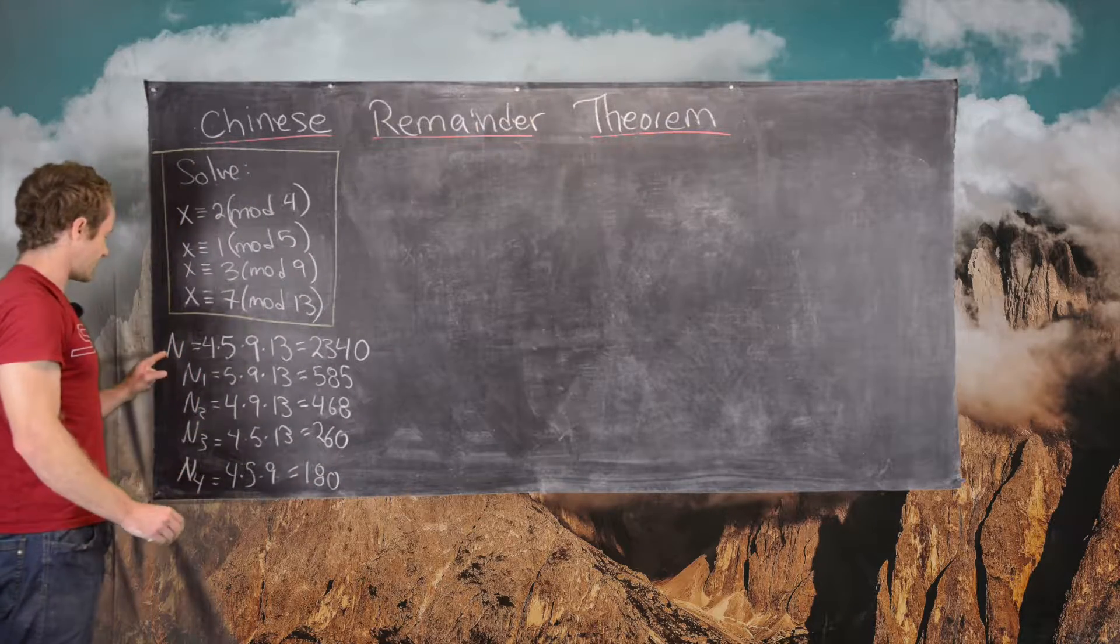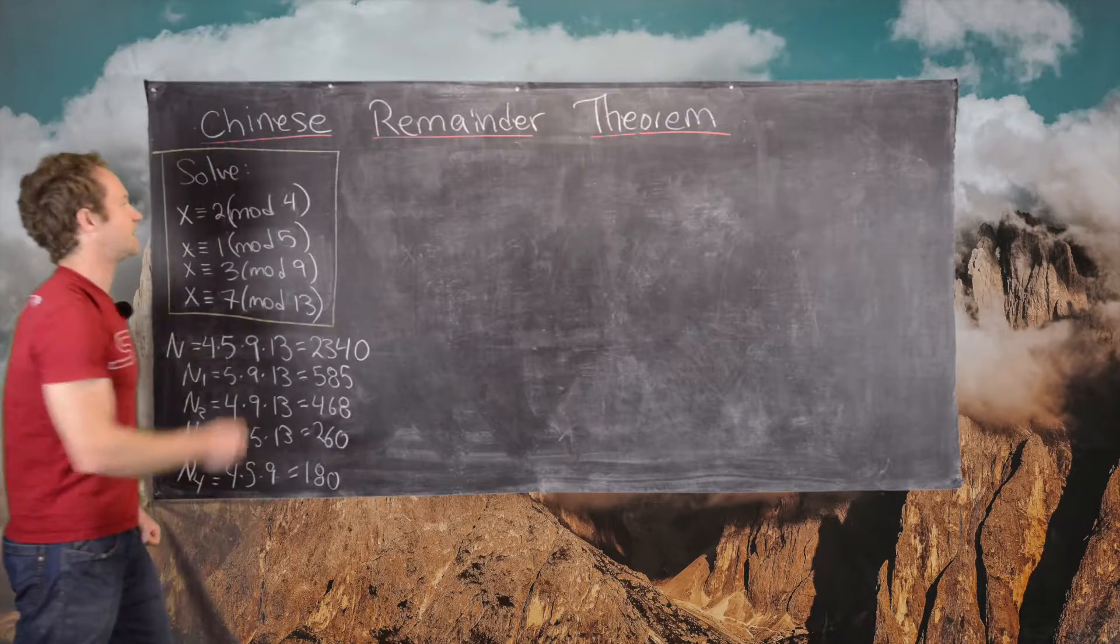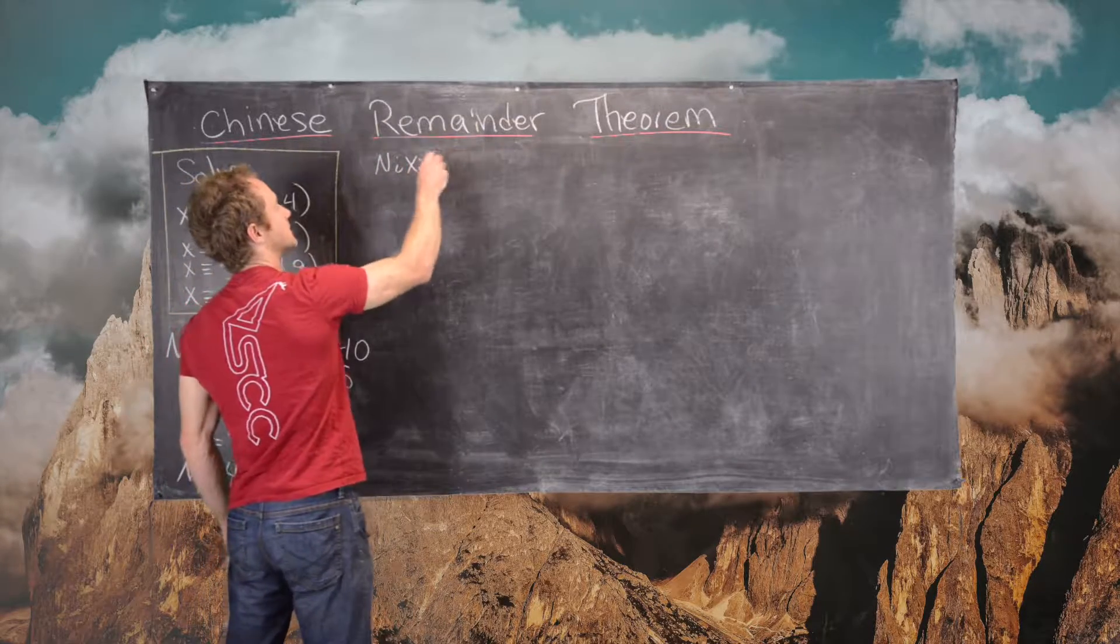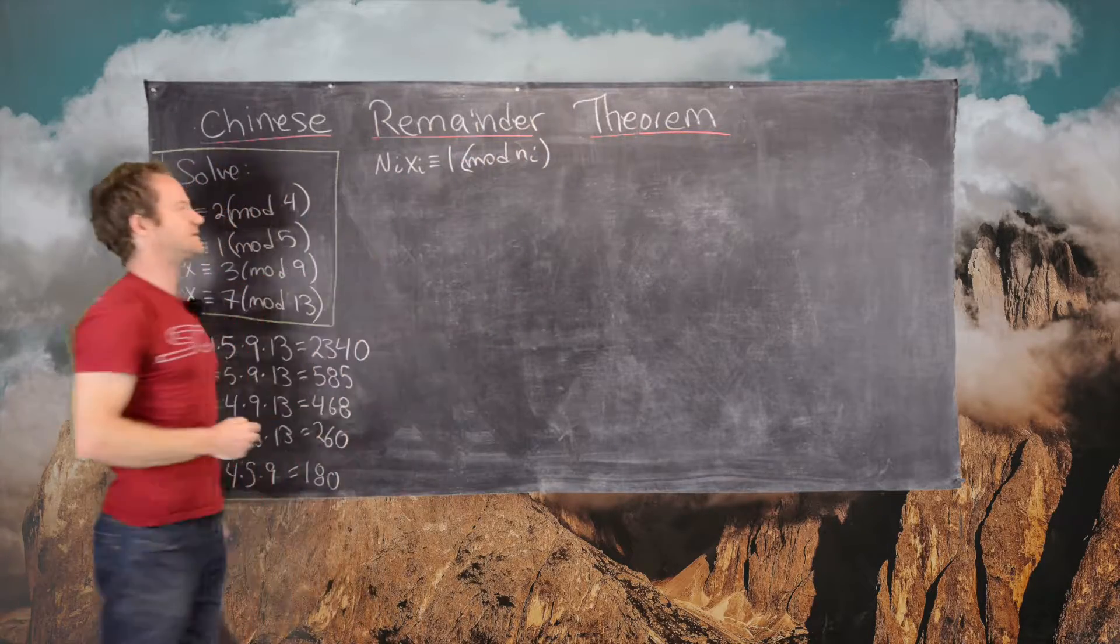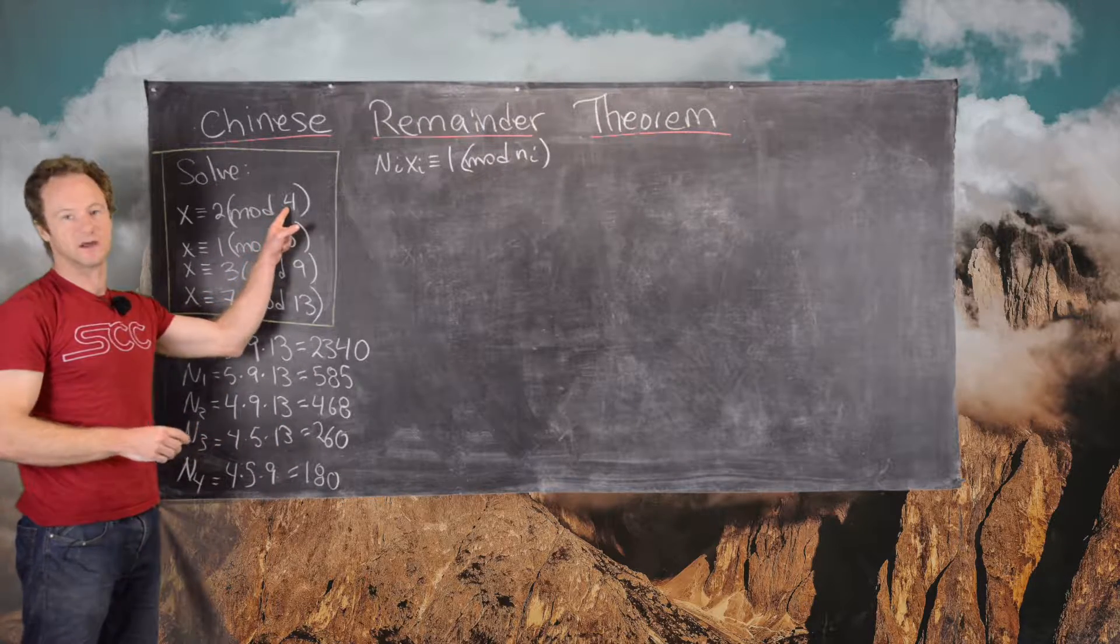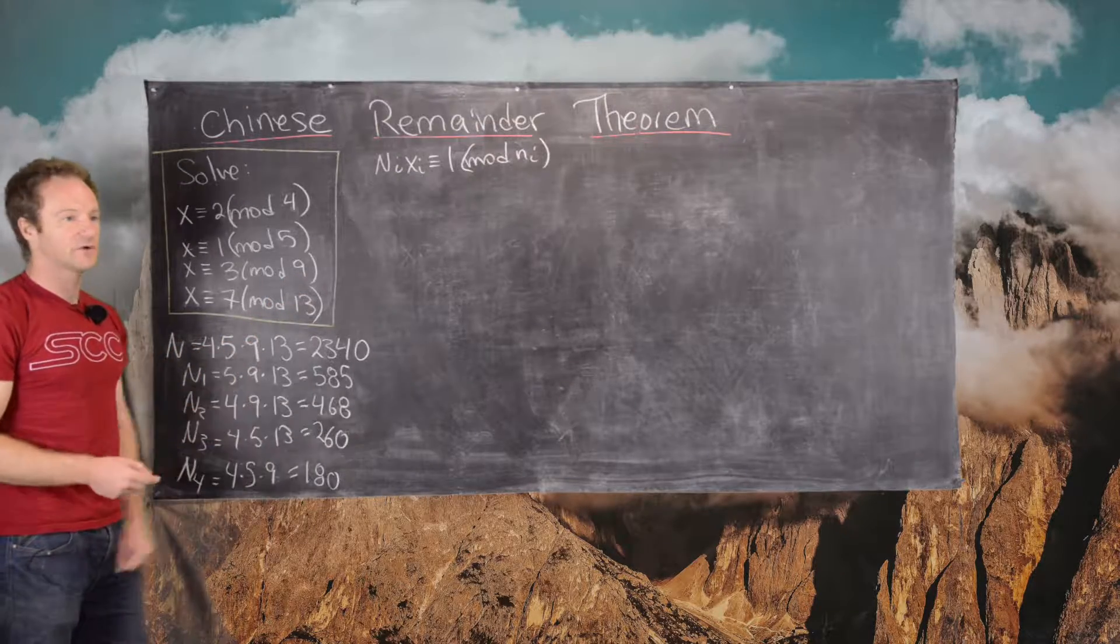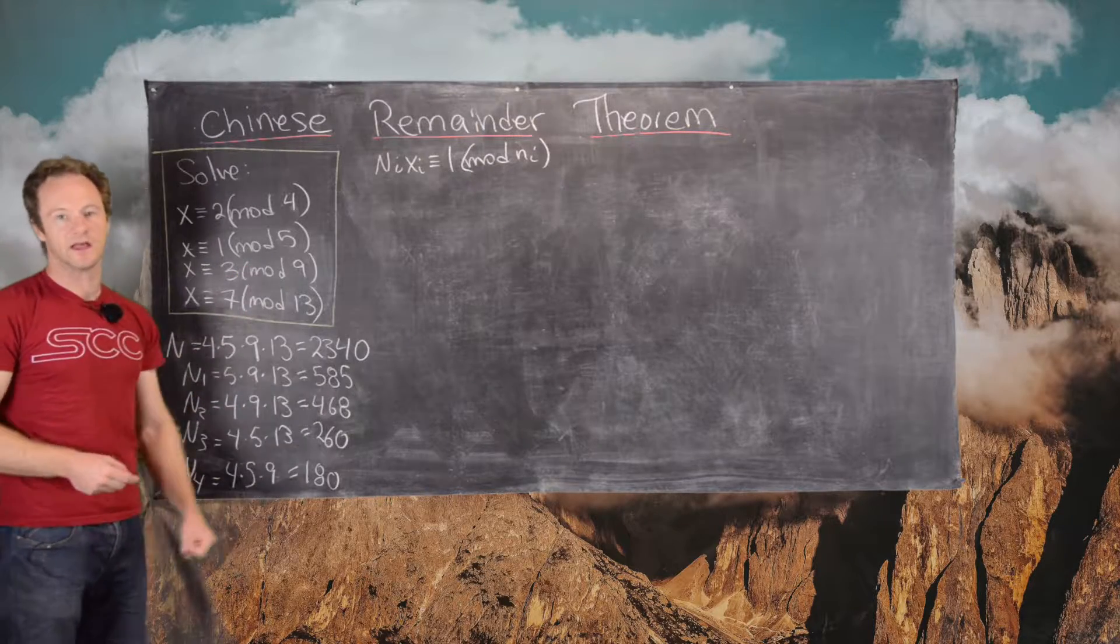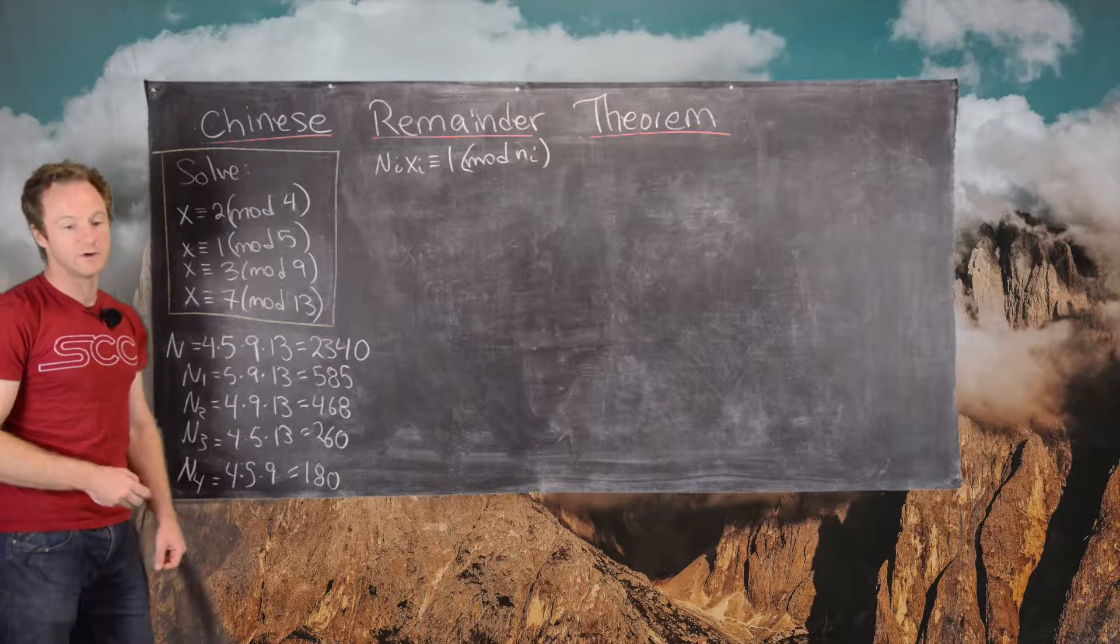So now that we've got our numbers capital N and all the capital NIs, we can move on to the next step. The next step is to solve all of these linear congruence equations: NI times XI is congruent to 1 mod little nI, where the little n's are given by these numbers. We need to do four of these.